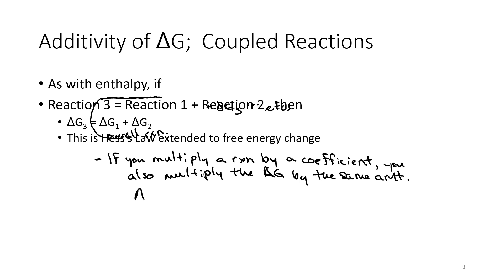Another thing - if you multiply a reaction by a coefficient, you're going to also multiply the delta G by the same amount. So if we had A going to B and the delta G for that was, say, positive 15 kilojoules, then the reaction of two A's going to two B's, your delta G would be equal to two times your 15 kilojoules or 30 kilojoules.